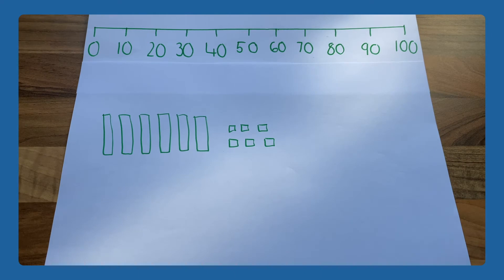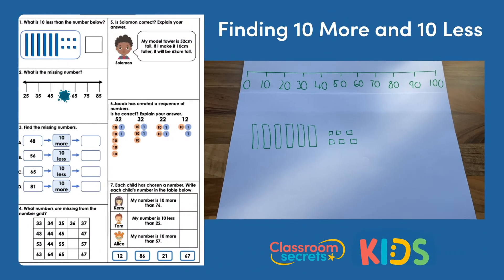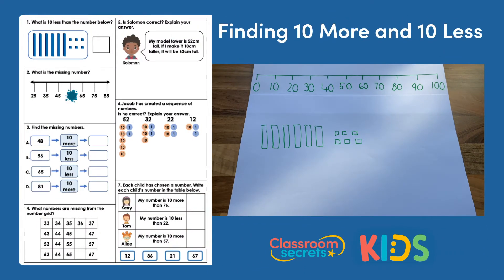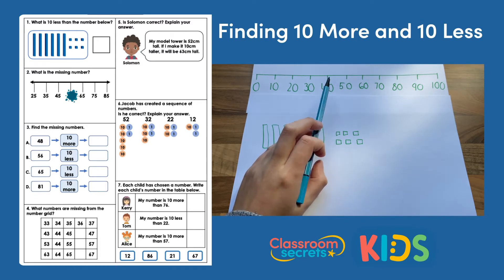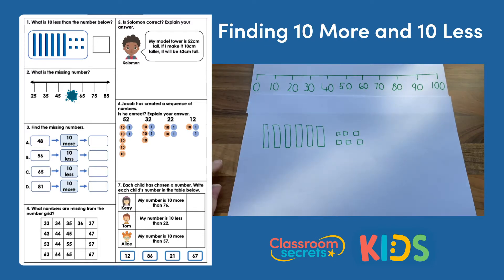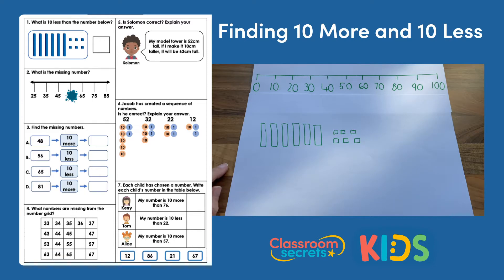Hello and welcome to this answer explanation video. This video will take you through the answers to the finding 10 more and 10 less worksheet and we'll talk you through some of the tricky bits. Remember when we add 10 the ones number stays the same — it's just the tens digit that changes. So for example if I had 43, 10 more would be 53 or 10 less would be 33. The ones digit isn't changing, it's just the tens that we're looking at today.